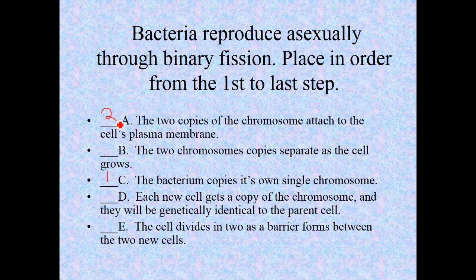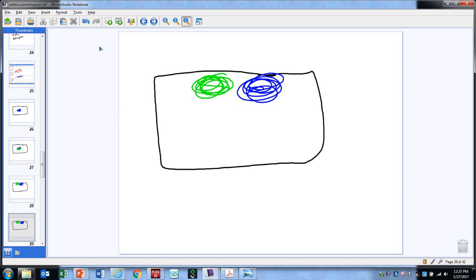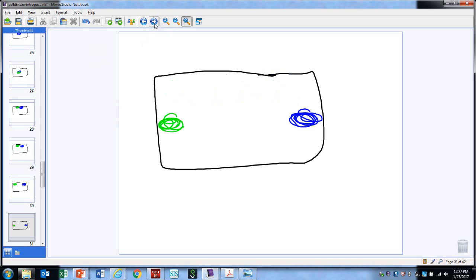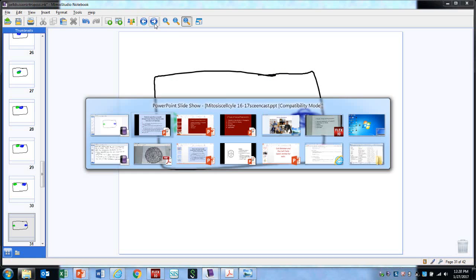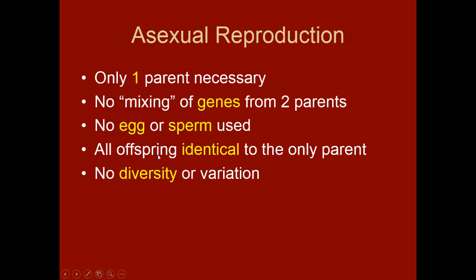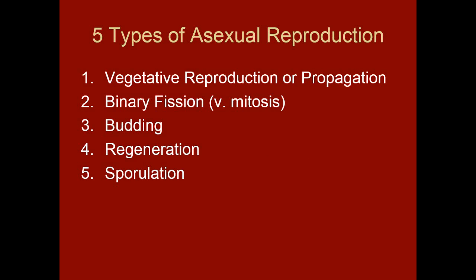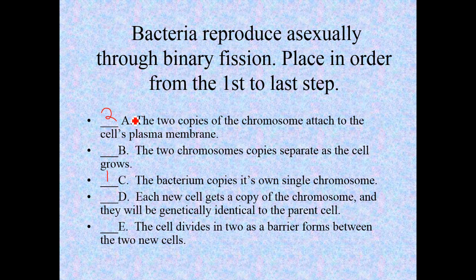As the cytoplasm expands in volume, it's going to push the chromosomes away from each other. Watch what's going on — it's expanding. If asexual reproduction is one cell dividing into two, making exact copies, that's what we're figuring out. So step three is B — the copies separate as the cell grows.